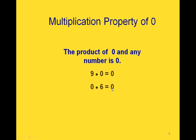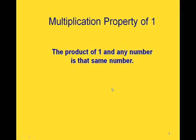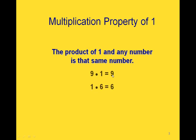The multiplication property of 1 says that the product of 1 and any number is that same number. So if we multiply 9 times 1, we get 9. And if we multiply 1 times 6, we get 6.